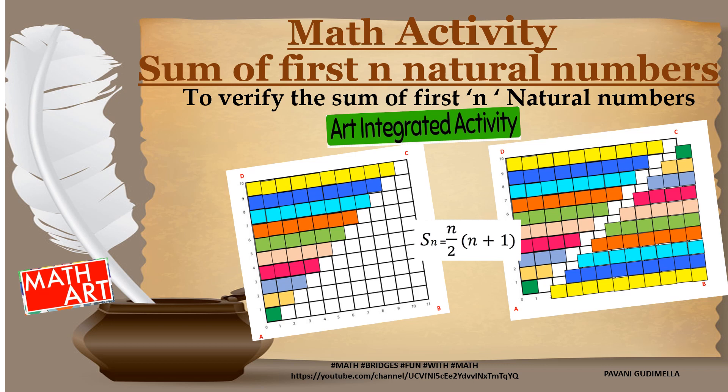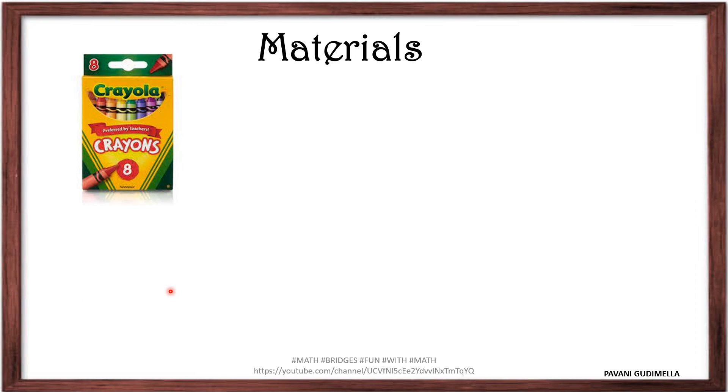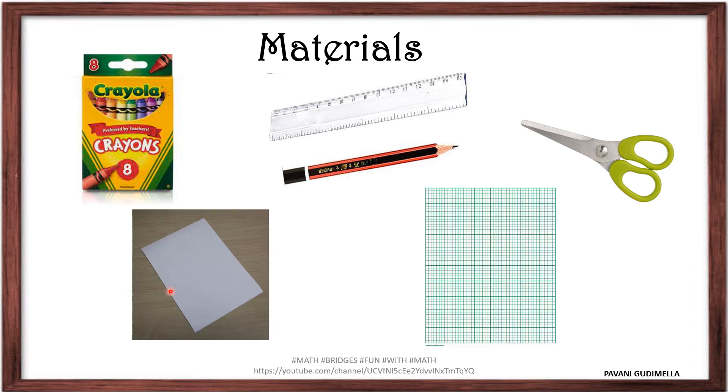The main objective of this activity is to verify the sum of the first n natural numbers. The materials required to do this activity are crayons or color pencils, a ruler or scale, a pair of scissors, and A4 size paper.